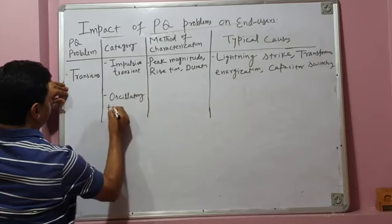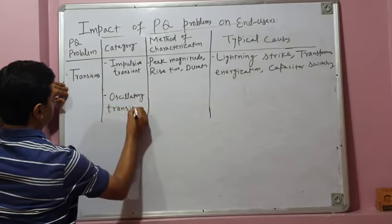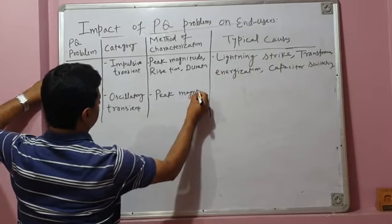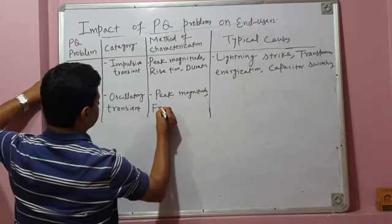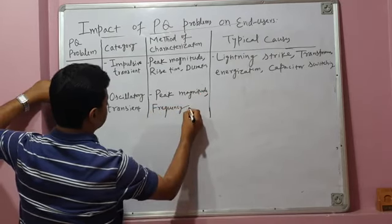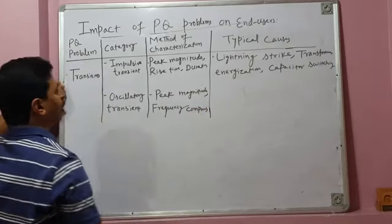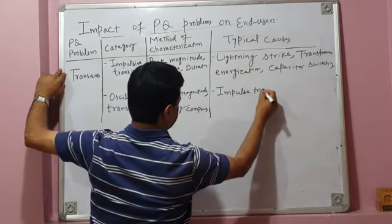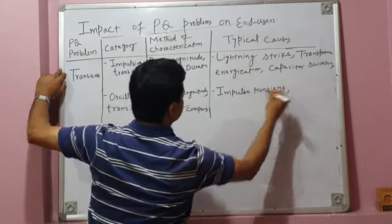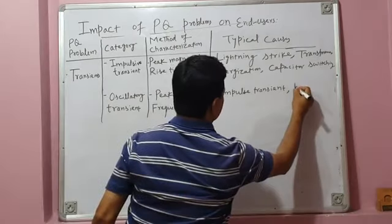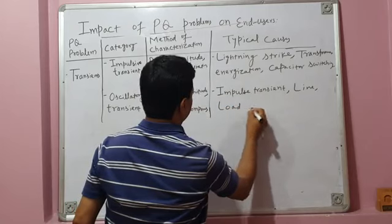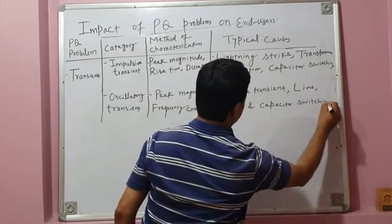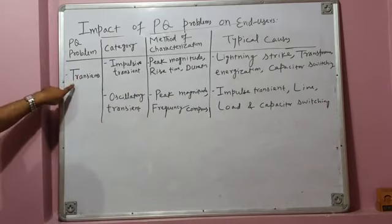Transient causes can be natural — such as lightning strikes — or man-made, such as transformer energization and capacitor switching at substations, which may result in temporary transients. This completes the first type of power quality problem: transients.